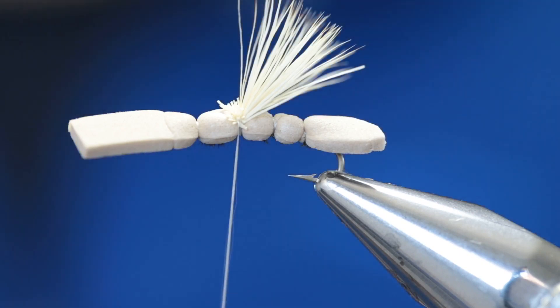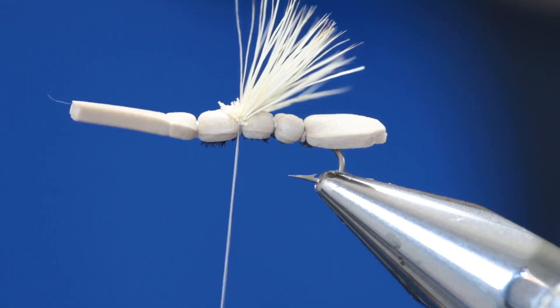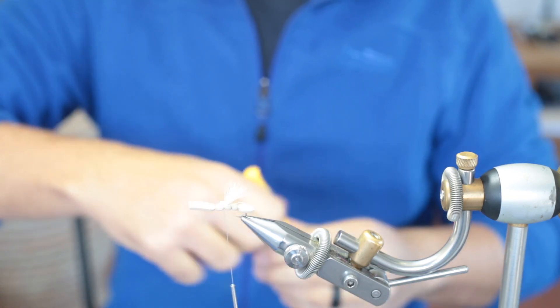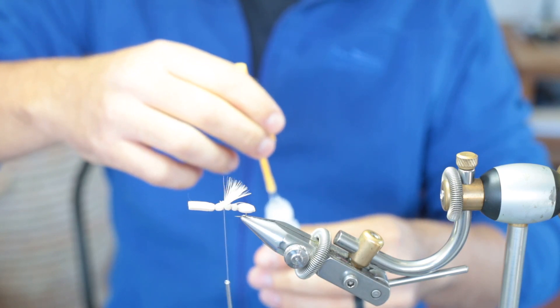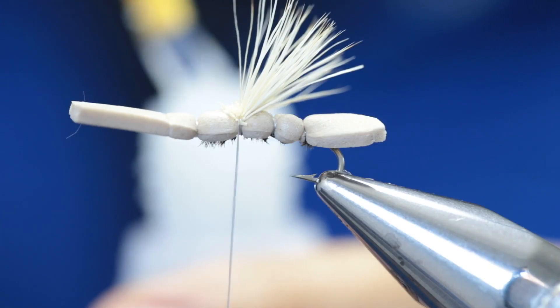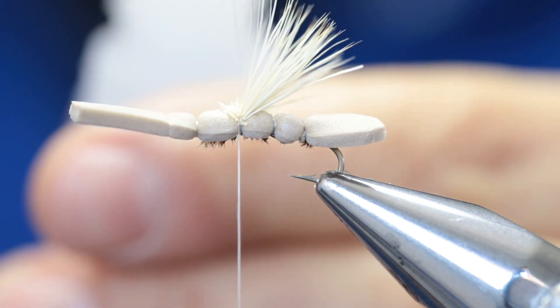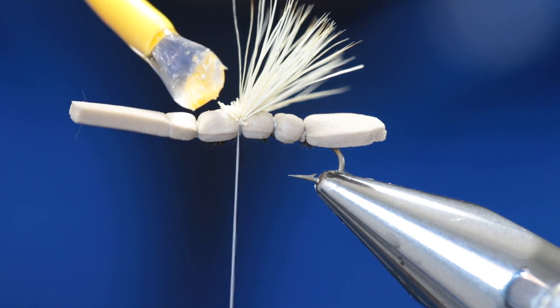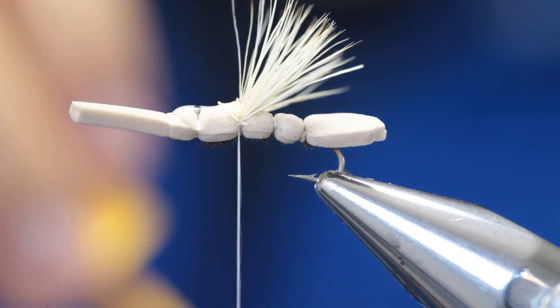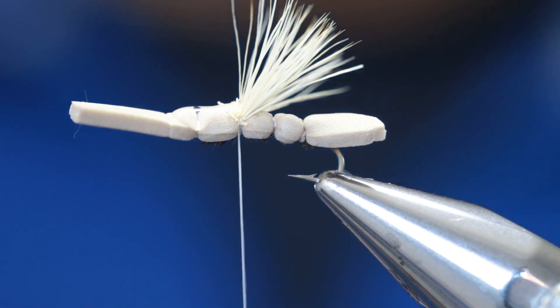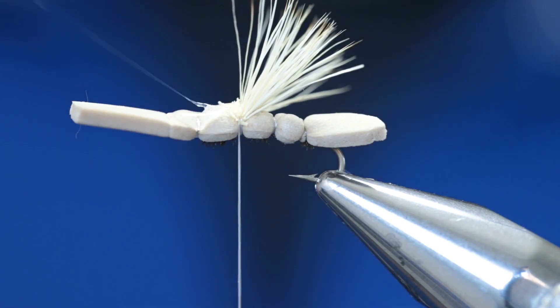Now we're going to add some more super glue to the top of the foam, like so. Might be too much but that's fine, we can remove it. Close the bottle properly and with your bodkin I'm just going to remove a little bit like so.